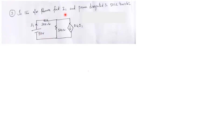In the network shown, find I1 and the power dissipated in the 500-ohm resistor. So the power dissipated in this resistor and the value of I1 are what we have been asked to find.